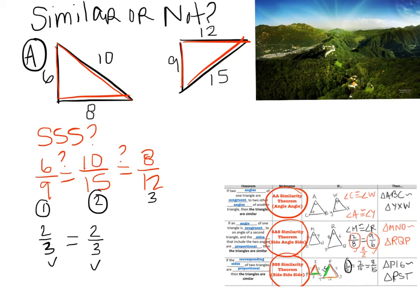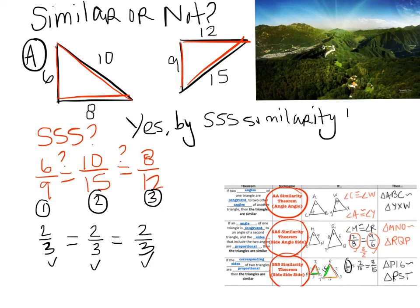So my first ratio, if I simplify it, dividing by 3, I get 2 thirds. My second ratio, if I divide by 5, I get 2 thirds. Those are equal, that's good. But remember, all three sides must be proportional. So for my third ratio, if I divide by 4, I get 2 thirds. All three are, so my answer is yes, they are similar, by the side, side, side similarity theorem. And this part, the word similarity, is key. You'd have to write that.